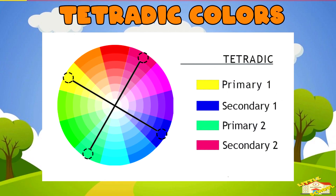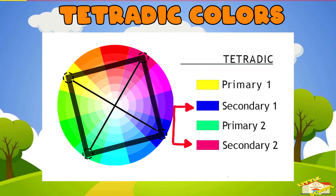Tetradic colors. Tetradic colors are two pairs of complementary colors forming a rectangle or square on the wheel.